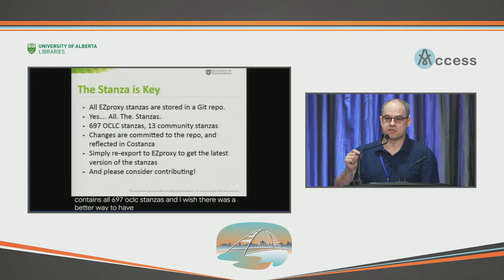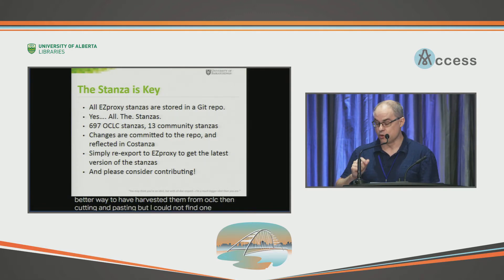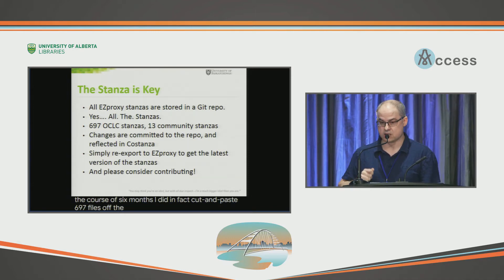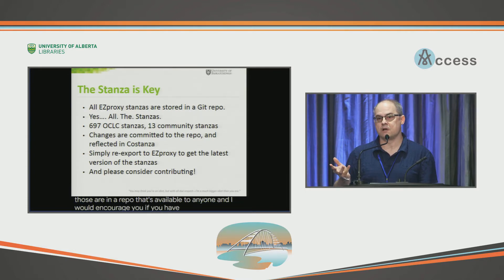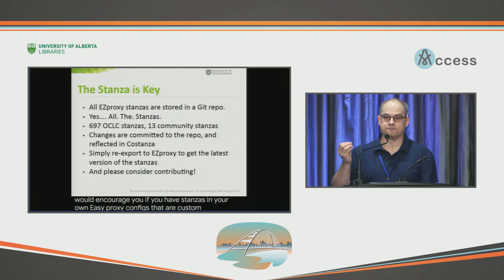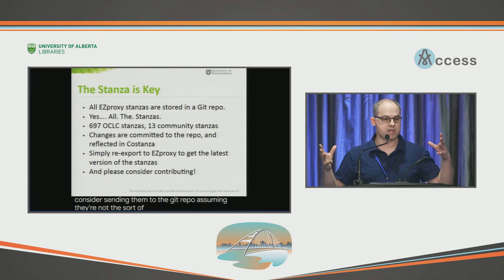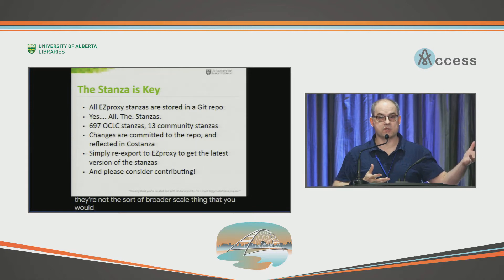Over the course of six months, I did in fact cut and paste 697 files off the OCLC website, plus the 13 that we found in our local EasyProxy config. Those are in a repo that's available to anyone. And I would encourage you, if you have stanzas in your own EasyProxy configs that are custom, consider submitting them to the Git repo — assuming they're not the sort of broader scale thing that you would submit to OCLC for inclusion in their site, which they're happy to take.